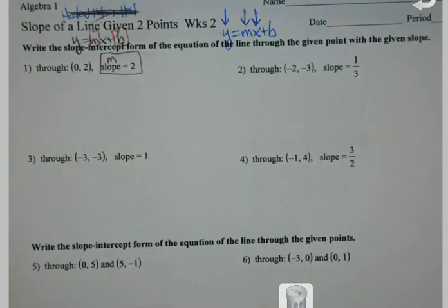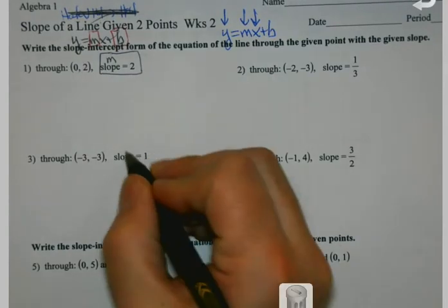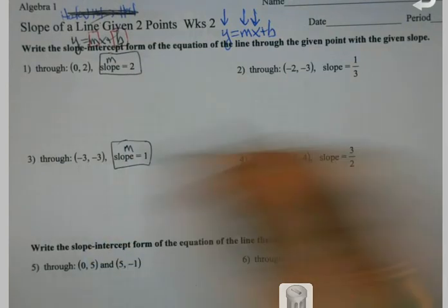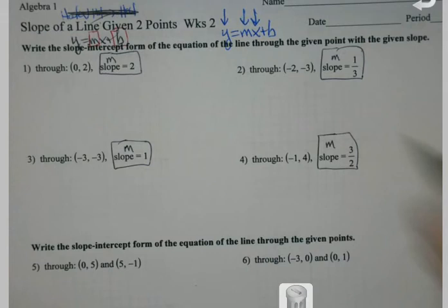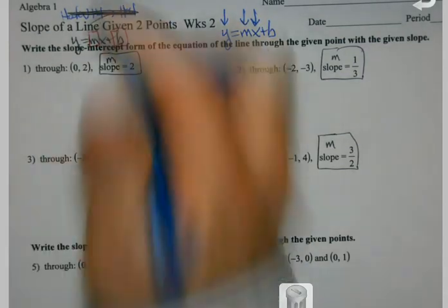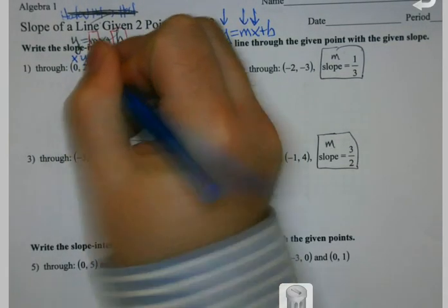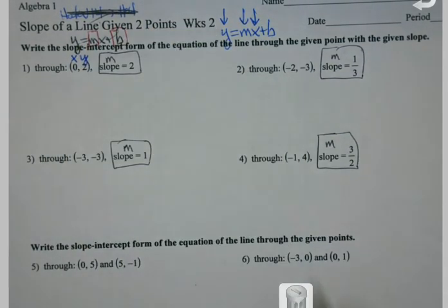We've already got our slope. So the slope is always m? Yeah, the slope is always going to be m. So what I'm going to do to help out here is help out with one and two, then I'm going to set you up with three and four. But when I'm doing these, my first job, once I figure out where everything's at, is to start plugging these in.